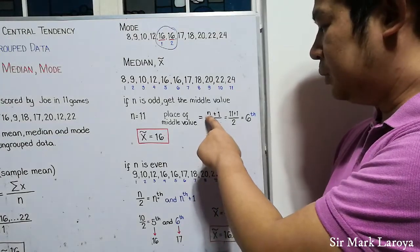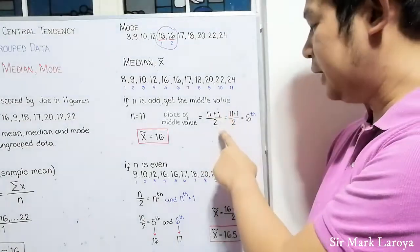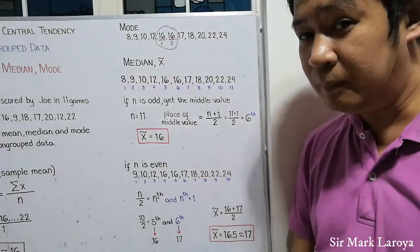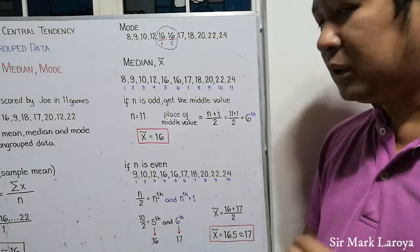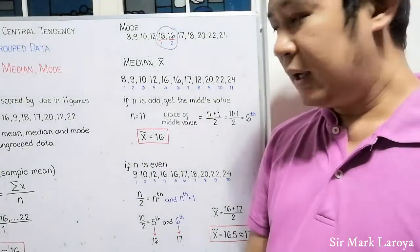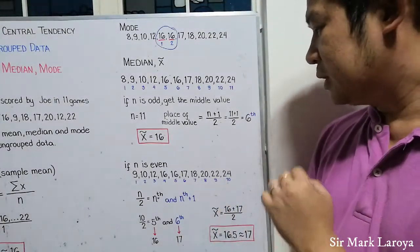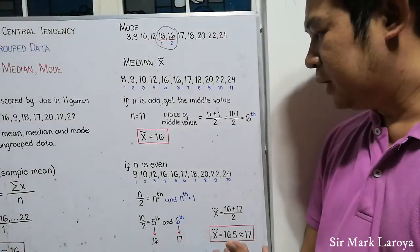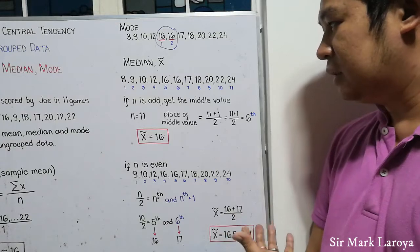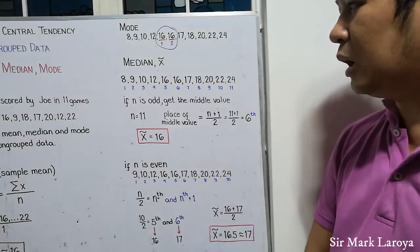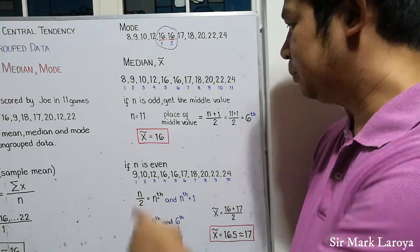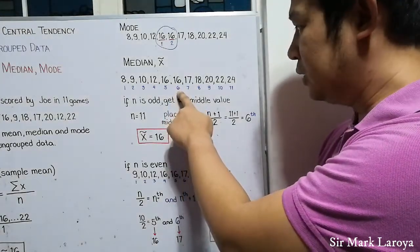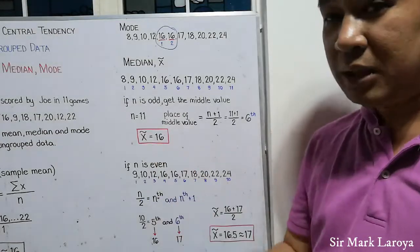So, it becomes (11 + 1) / 2 or that will be 12 divided by 2 and that will give you 6. So, 6 or the 6th value or the value at the 6th place among the dataset will be our median. So, in this case, 16 is our 6th value. So, 16 is our median.